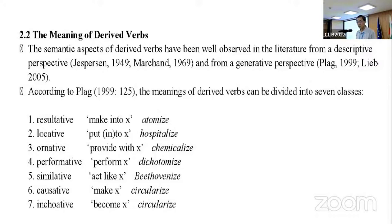Second, locative: putting X. For example, hospitalized, putting into a location. Third, ornative: provide with X. For example, chemicalize, provide something with a chemical. Fourth, performative: perform X. For example, dichotomize, meaning perform dichotomy. Fifth, simulative: act like X. For example, veteranize, act like a veteran. Sixth, causative: make X. For example, circularize, make circular. Seventh, inchoative: become X. For example, circularize in this case means become circular.